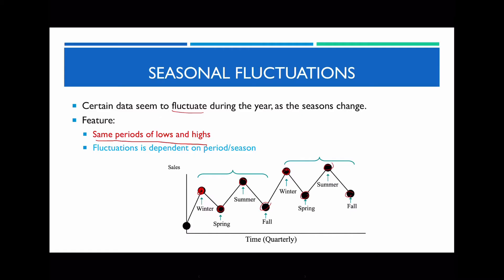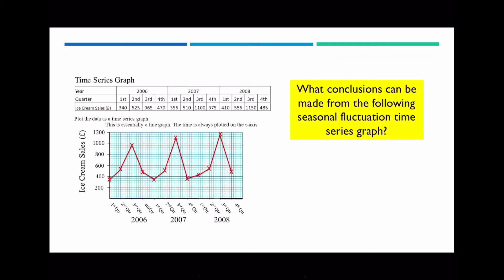Let's look at the very first type: seasonal fluctuation — probably the most easy one. A seasonal fluctuation can be readily determined when you see that certain data seems to fluctuate during the year as the seasons change. Notice that when it's winter or summer, these are times characterized by high periods, whereas when it's spring or fall, the data points are quite low. Because they alternate and repeat the exact same pattern during the exact same time for each year, this is referred to as a seasonal fluctuation.